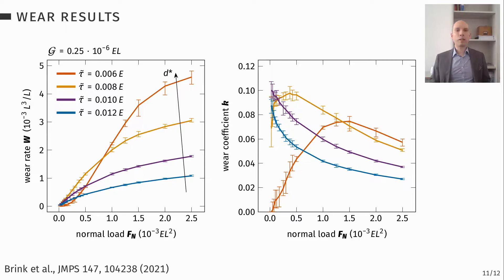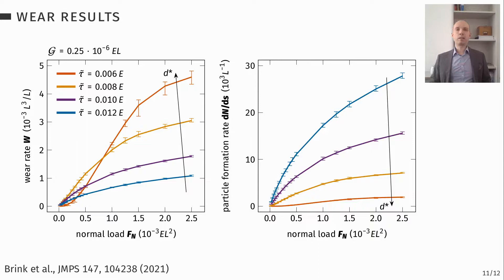One thing you can observe is that at low loads, your soft material has low wear rates. To understand that, you have to look at the particle formation rate, which basically tells you how many particles per unit sliding distance are formed. And there you can see that the hardest material has the most wear particles. It's just that these wear particles are quite small. So in sum, they really result in a low wear volume or low wear rate.